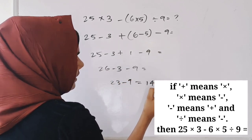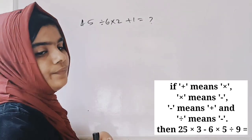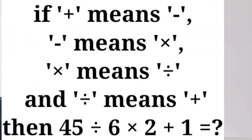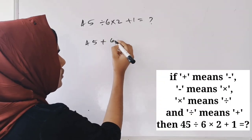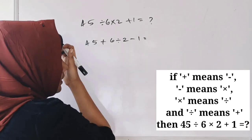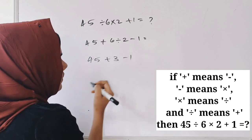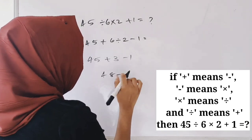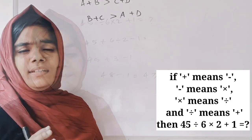Continuing: 26 minus 3 is 23, and 23 minus 9 is equal to 14. Next: if plus means minus, minus means into, into means divided by, and divided by means plus, then 45 plus 3 minus 1 gives 45 plus 3, and 48 minus 1 is equal to 47.